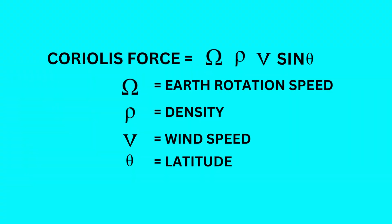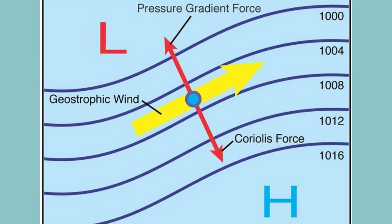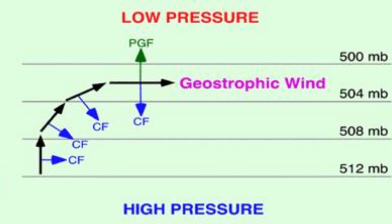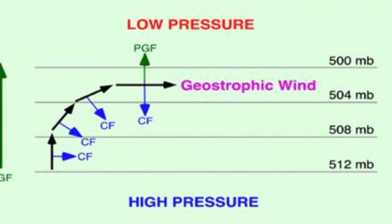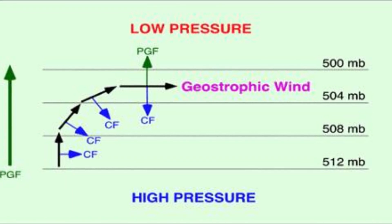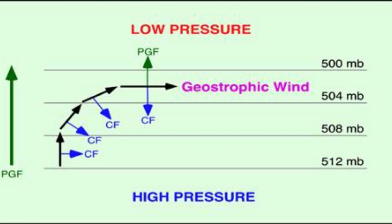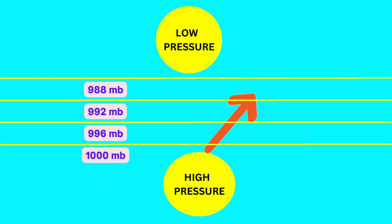The reduction in wind speed will also reduce Coriolis force since Coriolis force is directly proportional to wind speed. This will cause pressure gradient force and Coriolis force to be out of balance. The net effect of this reduction in Coriolis force is that it will not be able to turn the wind blowing from high pressure area to low pressure area by 90 degrees and will not be able to make it blow exactly parallel to isobars. So wind will blow across isobars at some angle, while some resemblance would be maintained that wind should blow from high to low pressure area.